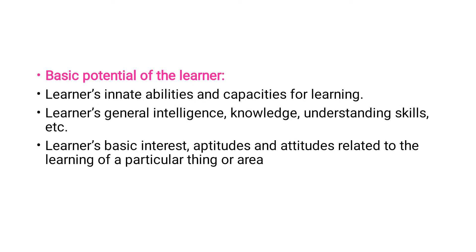Next is the basic potential of the learner — the learner's innate, inborn abilities. The intelligence level, observation capacity, knowledge, creative thinking level, special abilities, skills, understanding skills — everything is very important for learning to take place. Also important are the learner's interest, aptitude, and attitude level. A positive attitude, knowledge level, intelligence level — everything is going to determine the learning process. For example, if the learner is very much interested in a psychology class, he will listen and learn properly.